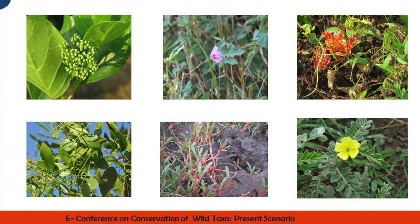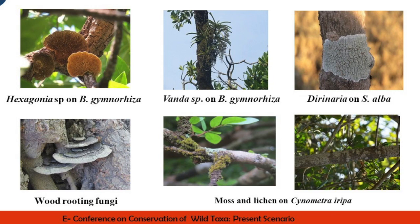These are some images of mangrove associates found along the coast of Maharashtra. Not only angiosperm plants — some fungi, lichen species, and bacterial species are also associated with mangroves. In the pictures we can observe the association of Hexagonia, Wanda, and Drynaria on Bruguiera gymnorrhiza and Sonneratia alba. Wood-rotting fungi were also reported associated with mangrove species, and some moss and lichen species are also associated with Ceriops iripa.